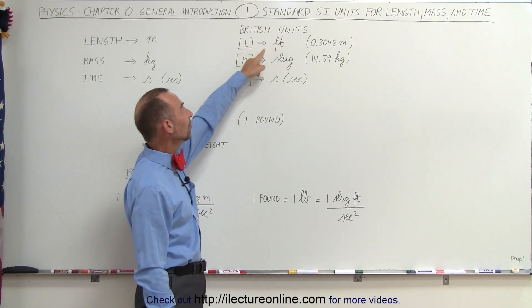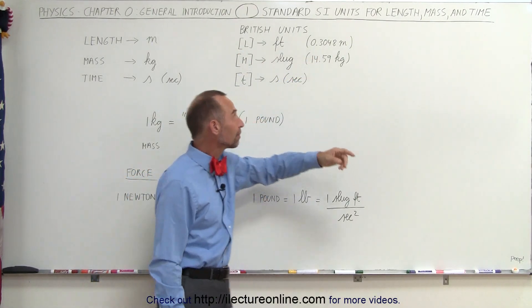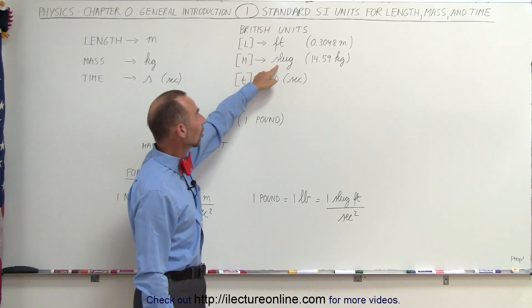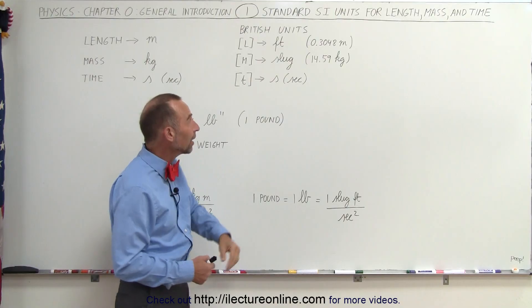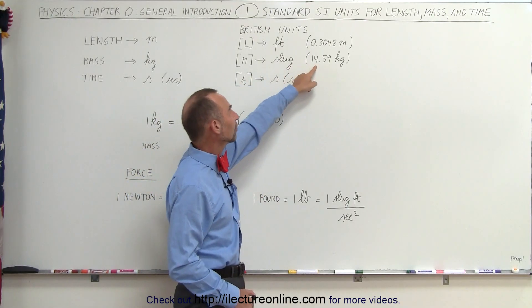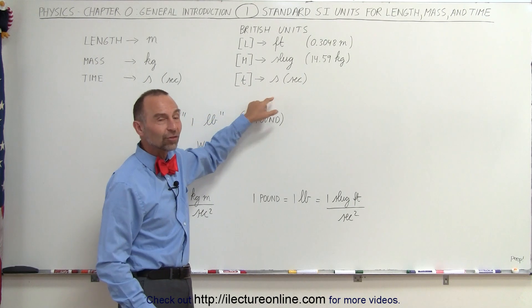Now, it turns out length is in feet, one foot is 0.3048 meters. We also use slugs for mass. Now, you don't hear that a lot, but in physics books you will encounter it. And the slug is equal to about 14.59 kilograms. And then for time, we also use seconds here.